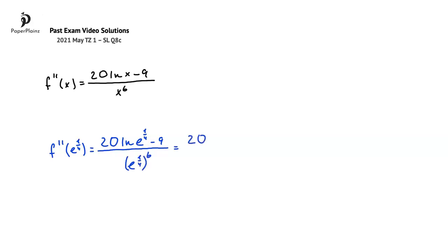Working further, we get 20 times ln e to the power of 1 fourth, and since ln is log base e, for ln e to the power of 1 fourth, we simply get 1 fourth.